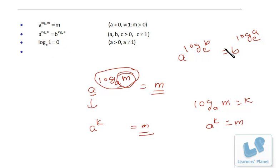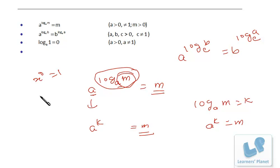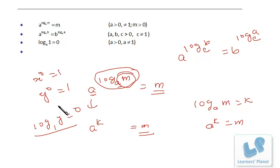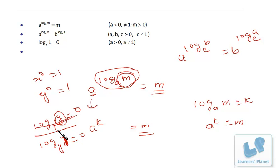Similarly, a raised to log b to the base e will be b raised to log a to the base e. Also, log 1 to any base is 0. Log 1 will always be 0, irrespective of the value of the base. This is because any number raised to 0 is 1. So if I take logarithm of 1, that's 0 — it doesn't matter what the base is, it will always be 0.